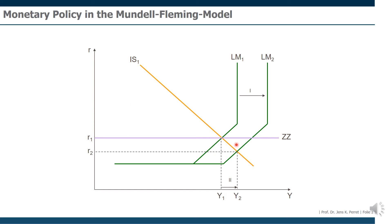If a lot of euros are offered on the foreign exchange market, the price for euros will drop — so euros will depreciate. Now, since we're assuming a flexible exchange rate regime, yes, the euro can depreciate. So the value of the euro will drop, meaning our goods become cheaper from a foreign perspective. On the other hand, from our perspective, foreign goods will become more expensive. In consequence, foreigners will buy more domestic goods and we will buy less foreign goods — so our exports will increase and our imports will decrease.